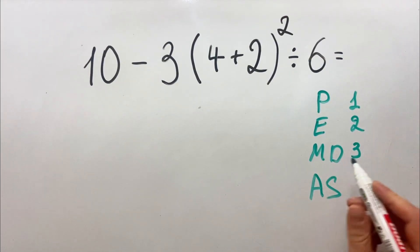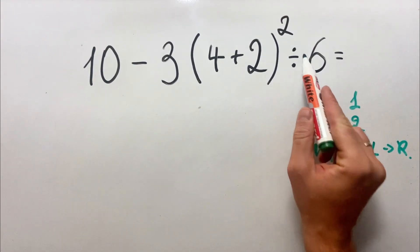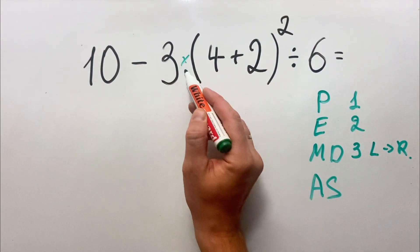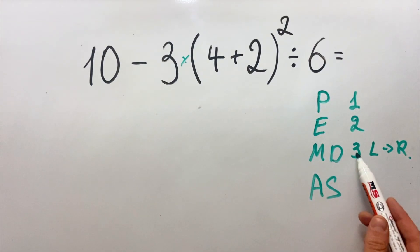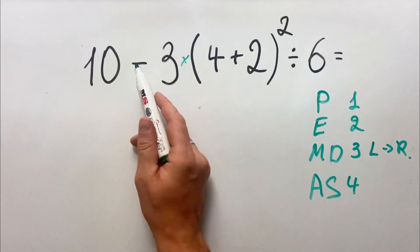Then we have multiplication and division which, if we have several, must be done from left to right. Here we can see we have one division and one multiplication. We will do it in the third place, and in the fourth place we will do the subtraction.